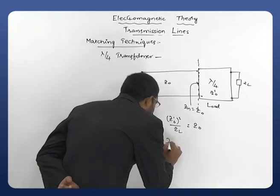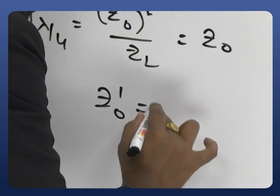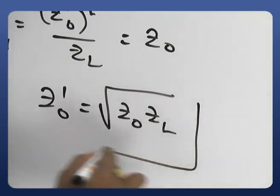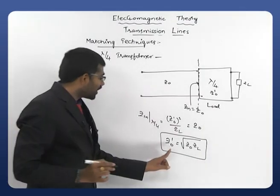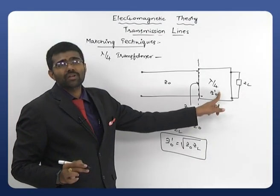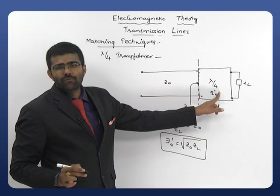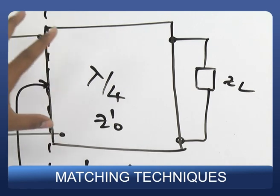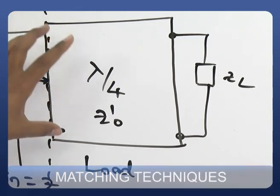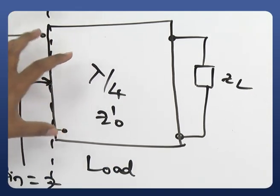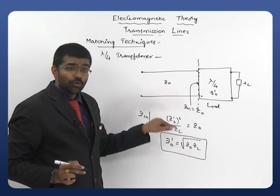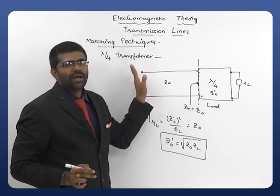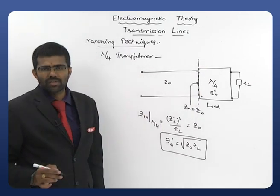Setting Z0' squared divided by ZL equal to Z0, we solve to get Z0' equals the square root of Z0 times ZL. This is the required characteristic impedance of our lambda by 4 transformer or lambda by 4 inverter. Whenever you design a lambda by 4 transformer for matching, you must use this characteristic impedance for the lambda by 4 line between the load and the main transmission line.